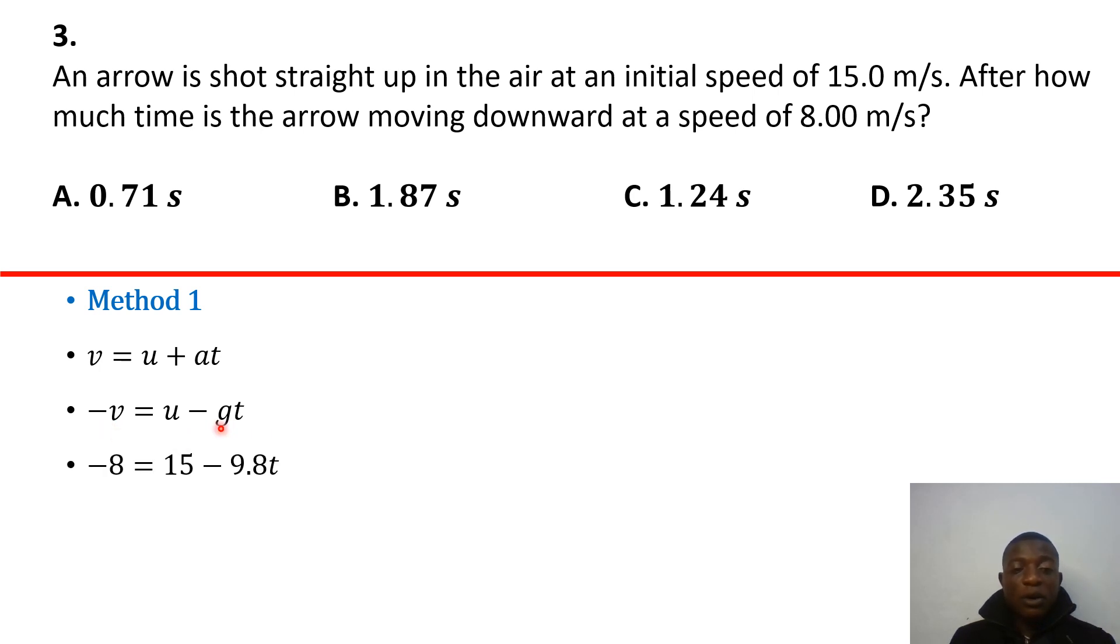Of course, g there is negative, because again, you're going against gravity, right? So you're accelerating, so that g is negative. So if we plug in the value of the initial velocity, the final velocity is negative 8, because you're moving downwards, and make time the subject, you actually have 2.35 seconds.